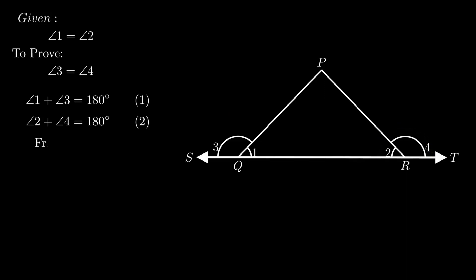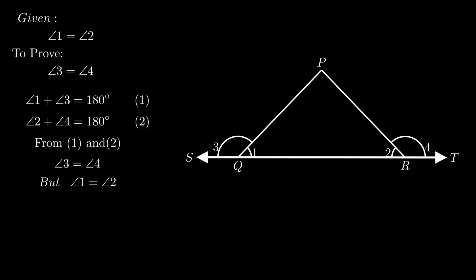Using the axiom that things which are equal to the same thing are equal to one another, from equations 1 and 2, the sum of angle 1 and angle 3 equals the sum of angle 2 and angle 4. Since angle 1 equals angle 2, they cancel out each other, so angle 3 equals angle 4. Hence angle PQS equals angle PRT.